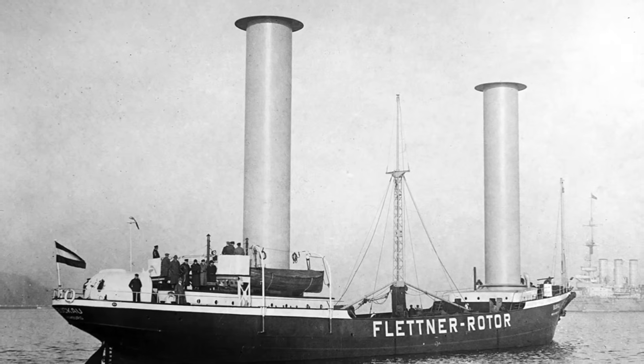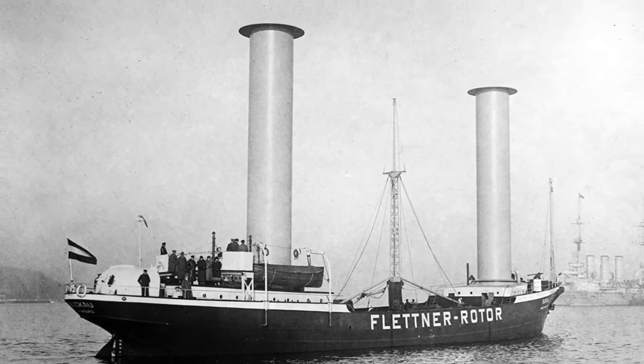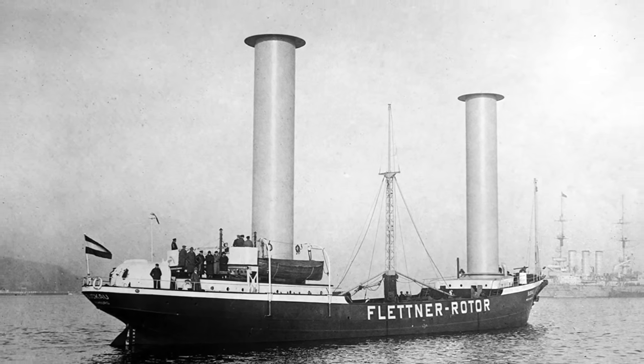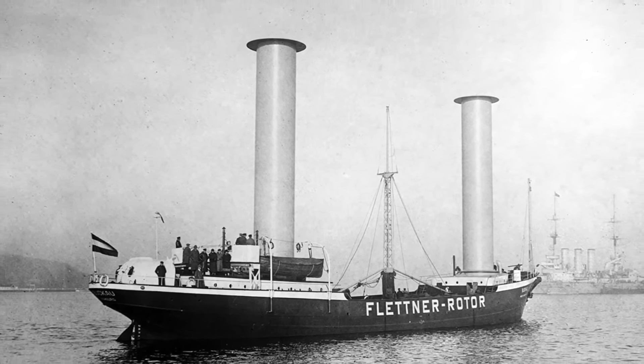In the 1920s, he removed the masts from an old sailing ship and replaced the sails with two vertical cylinders as a means of powering it. The boat was still dependent on wind, but the spinning columns used the Magnus effect to push the boat forward.